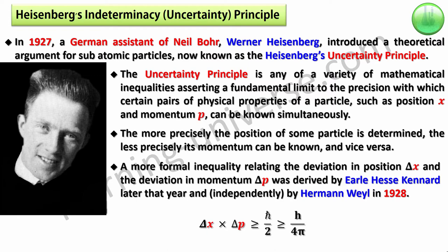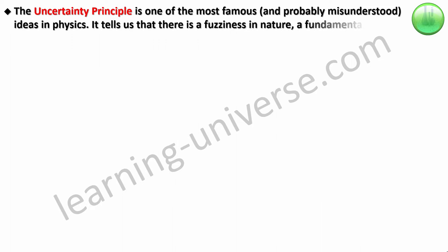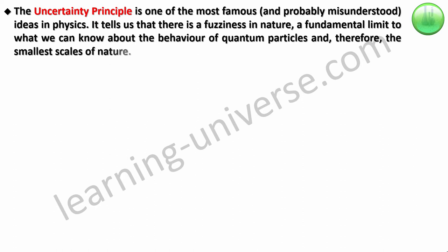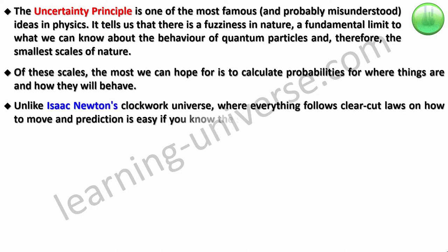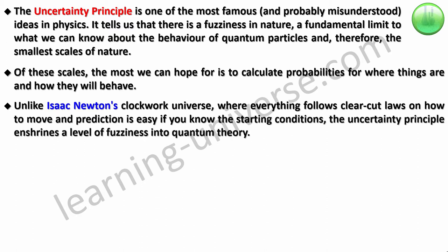Now, the uncertainty principle is one of the most famous and probably the most misunderstood ideas in physics. It tells us that there is fuzziness in nature. A fundamental limit to what we can know about the behavior of quantum particles and therefore the smallest scales of nature. Of these scales, the most we can hope for is to calculate probabilities for where things are and how they will behave. Unlike Isaac Newton's clockwork universe, where everything follows clear-cut laws and prediction is easy if you know the starting conditions, the uncertainty principle enshrines a level of fuzziness into quantum theory.